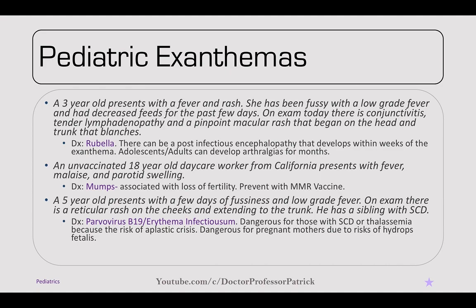A five-year-old presents with a few days of fussiness and low-grade fever. On exam, there's a reticular rash on the cheeks that extends to the trunk, and he has a sibling with sickle cell disease. This is parvovirus B19, or erythema infectiosum. It's dangerous to those with sickle cell disease or thalassemia due to the risk of aplastic crisis. It's also dangerous for pregnant mothers due to the risk of hydrops fetalis.